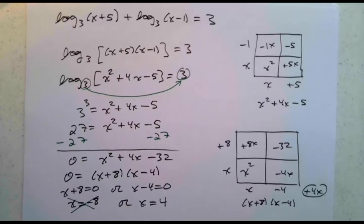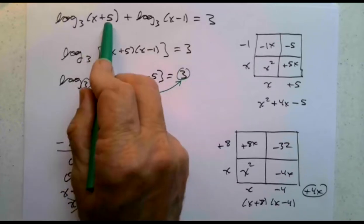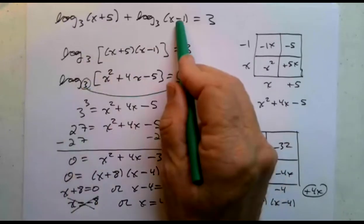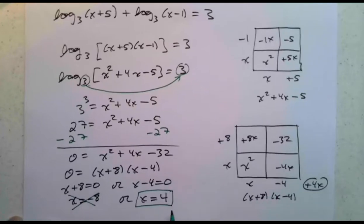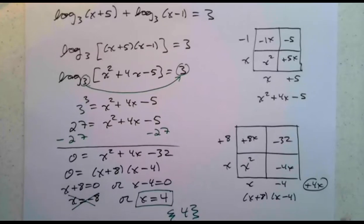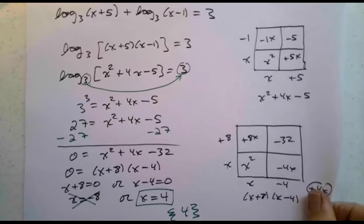You must take logs of positive numbers. 0 is not acceptable. Negative number is not acceptable. If I plug 4 in, 4 plus 5 is 9, that's in the domain. 4 minus 1 is 3, that's in the domain. x equals 4 is acceptable. Now, let's check that with the graphing calculator or with Desmos. So we believe the answer to this is 4. That is the only solution.